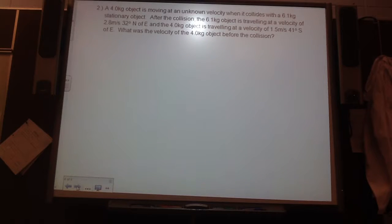after the collision, the 6.1-kilogram object is traveling at a velocity of 2.8 meters per second at 32 degrees north of east. And the 4-kilogram object is traveling at a velocity of 1.5 meters per second at 41 degrees south of east. What is the velocity of the 4-kilogram object before the collision?